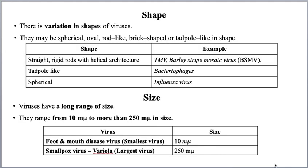Now let us take the shape of viruses. Various shapes are present — not just one or two. A virus may be spherical, oval, rod-shaped, brick-shaped, or tadpole-shaped — many shapes exist.